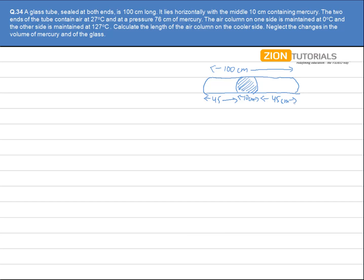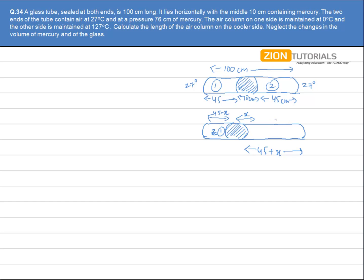The entire tube is at 27 degrees Celsius initially. Afterward, mercury shifts — let us assume it shifts right by a distance x. So the left side becomes 45 minus x, and the right side becomes 45 plus x. Let us call the left compartment 'compartment one' and the right compartment 'compartment two'.